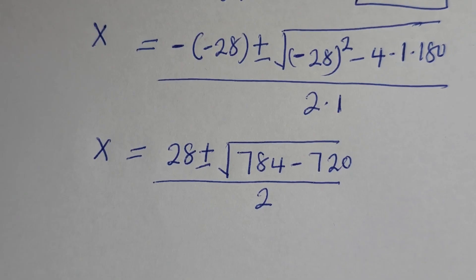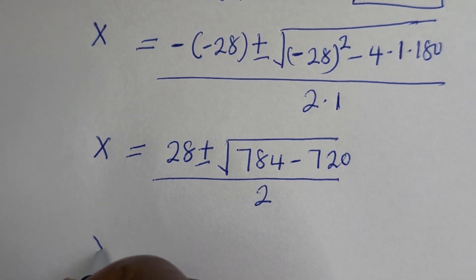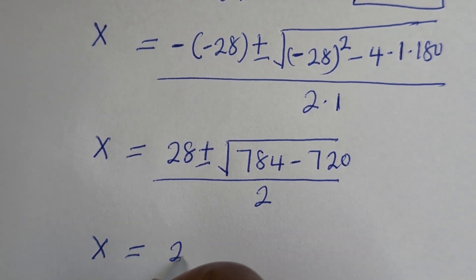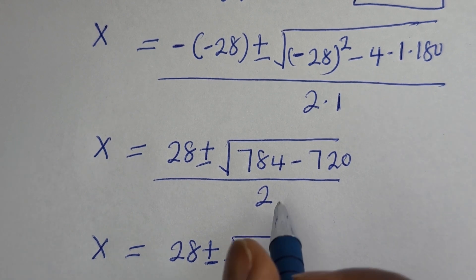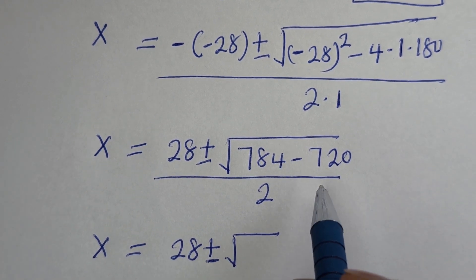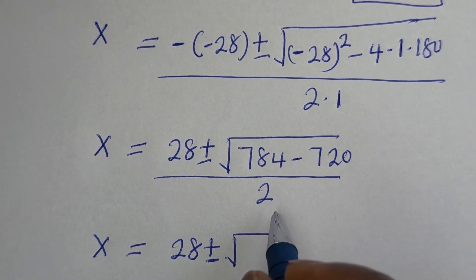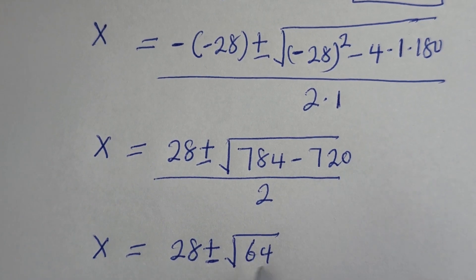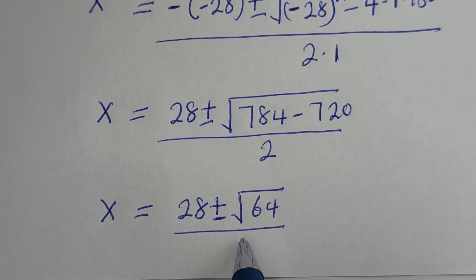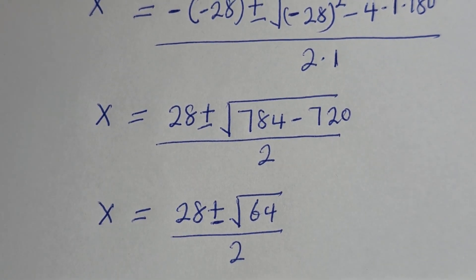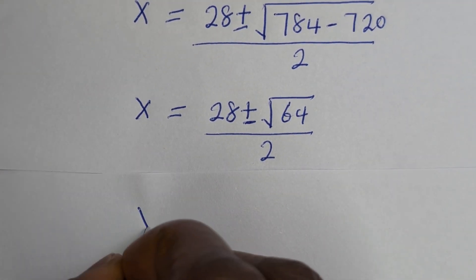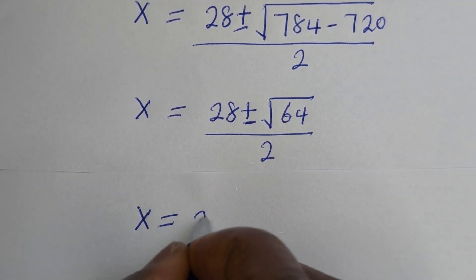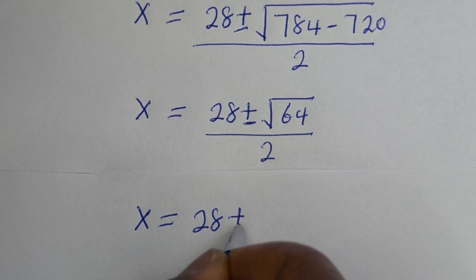S is equal to 28 plus or minus the square root of 784 minus 720, that is 64, over 2.